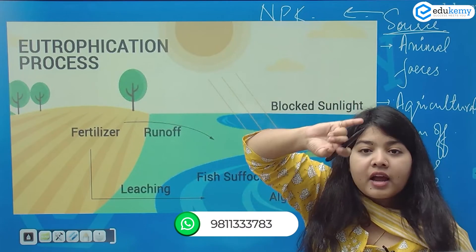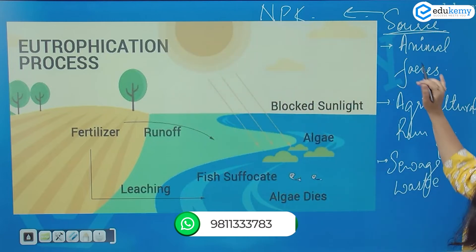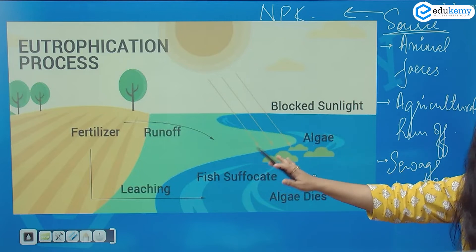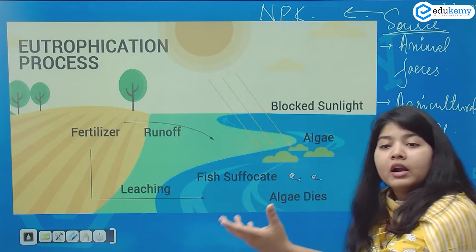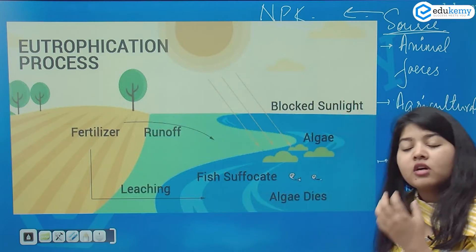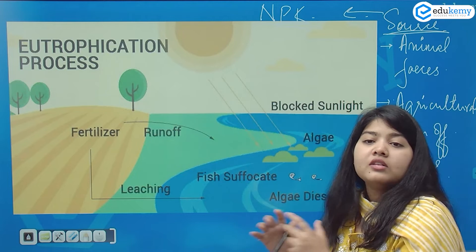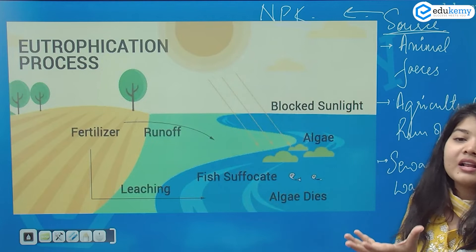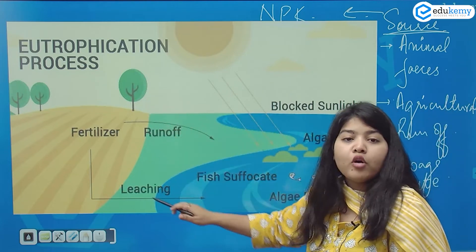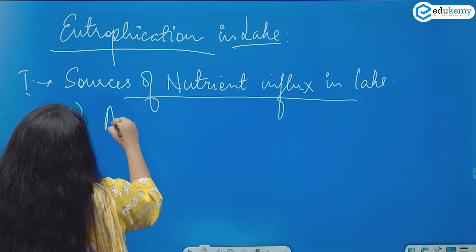We have nitrogen, phosphate, and potassium — getting all of this through agricultural runoff in the form of excess fertilizer, then in the form of animal feces which are dumped into these lakes, and then the sewage waste, which is also dumped and is again rich in these nutrients. It basically results in excess algal production, as you can see in the form of a green layer. The first subtopic is agricultural runoff.